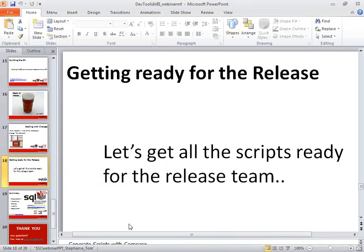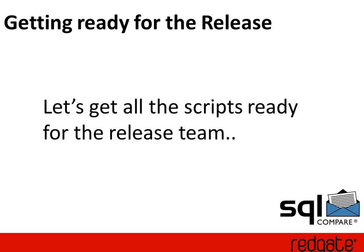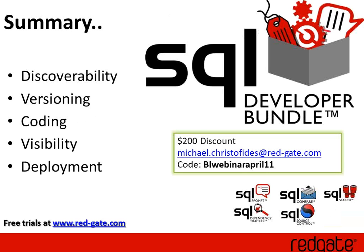We've seen right from the initial investigation all the way through to the final deployment, and we've had help at every step of the way. We've had database and object discovery using SQL Dependency Tracker and SQL Search. We've been able to safeguard our work using SQL Source Control. SQL Prompt and SQL Search assisted us in creating our package and the SQL code required. Visibility as a whole has been improved by storing logic on SQL Server and using SQL Source Control. And finally, the scripts for deployment were created using SQL Compare in just a few steps. That covers our five areas: discoverability, versioning, coding, visibility, and deployment. All the tools used today are available as part of the SQL Developer Bundle.